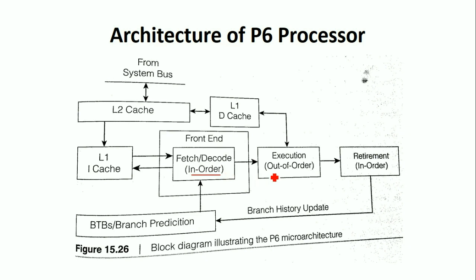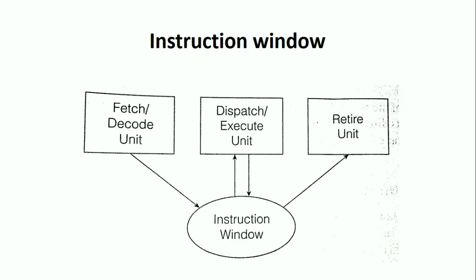The execution unit operates out of order, while the retirement unit is in order. Out of order means that when an instruction's operand is passed to a reservation station, it is considered issued for execution even if a functional unit is not yet available. The operands can wait in the reservation station without incurring a structural hazard, because the reservation station is considered part of a functional unit. This leads to out-of-order execution.